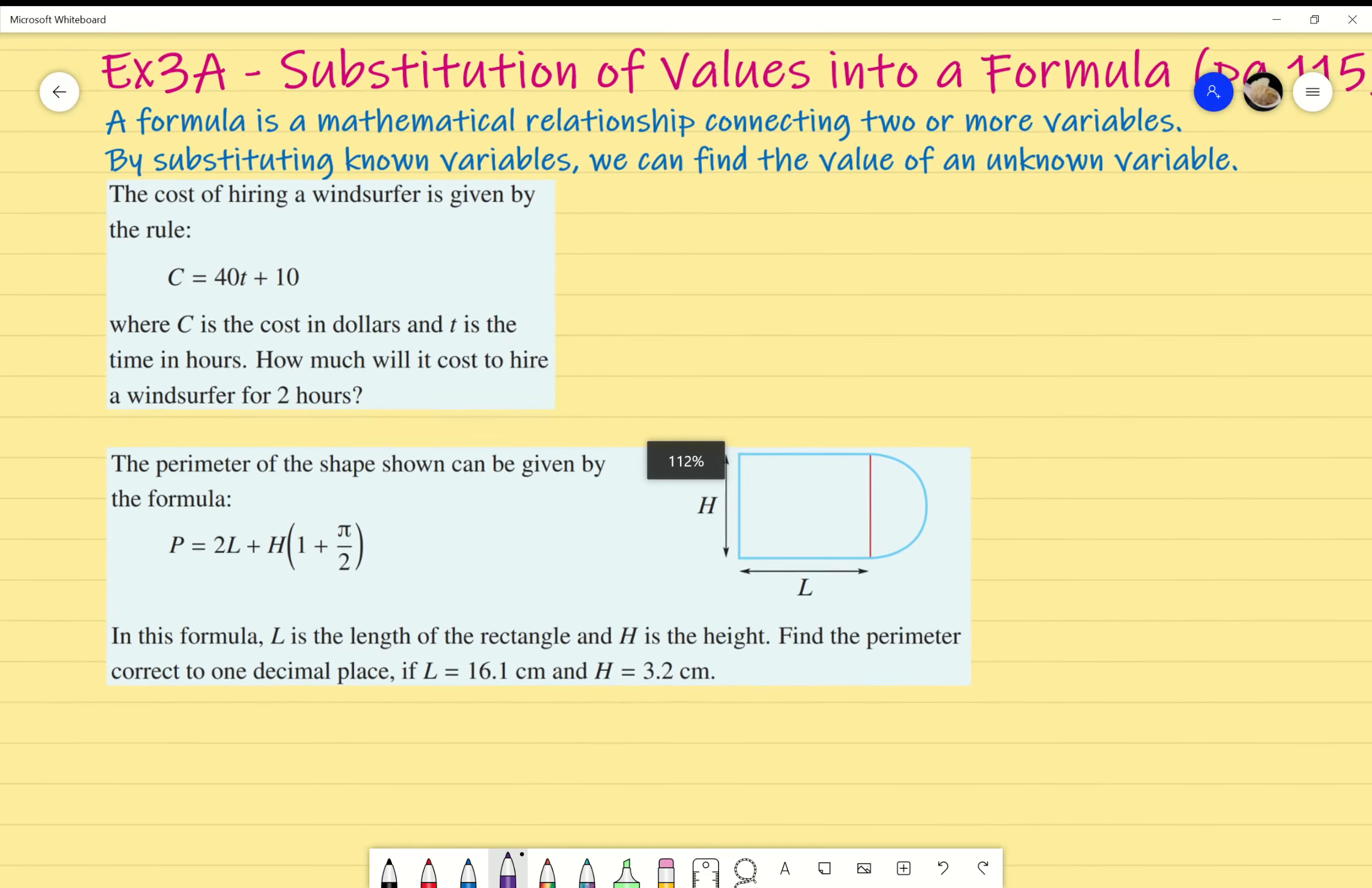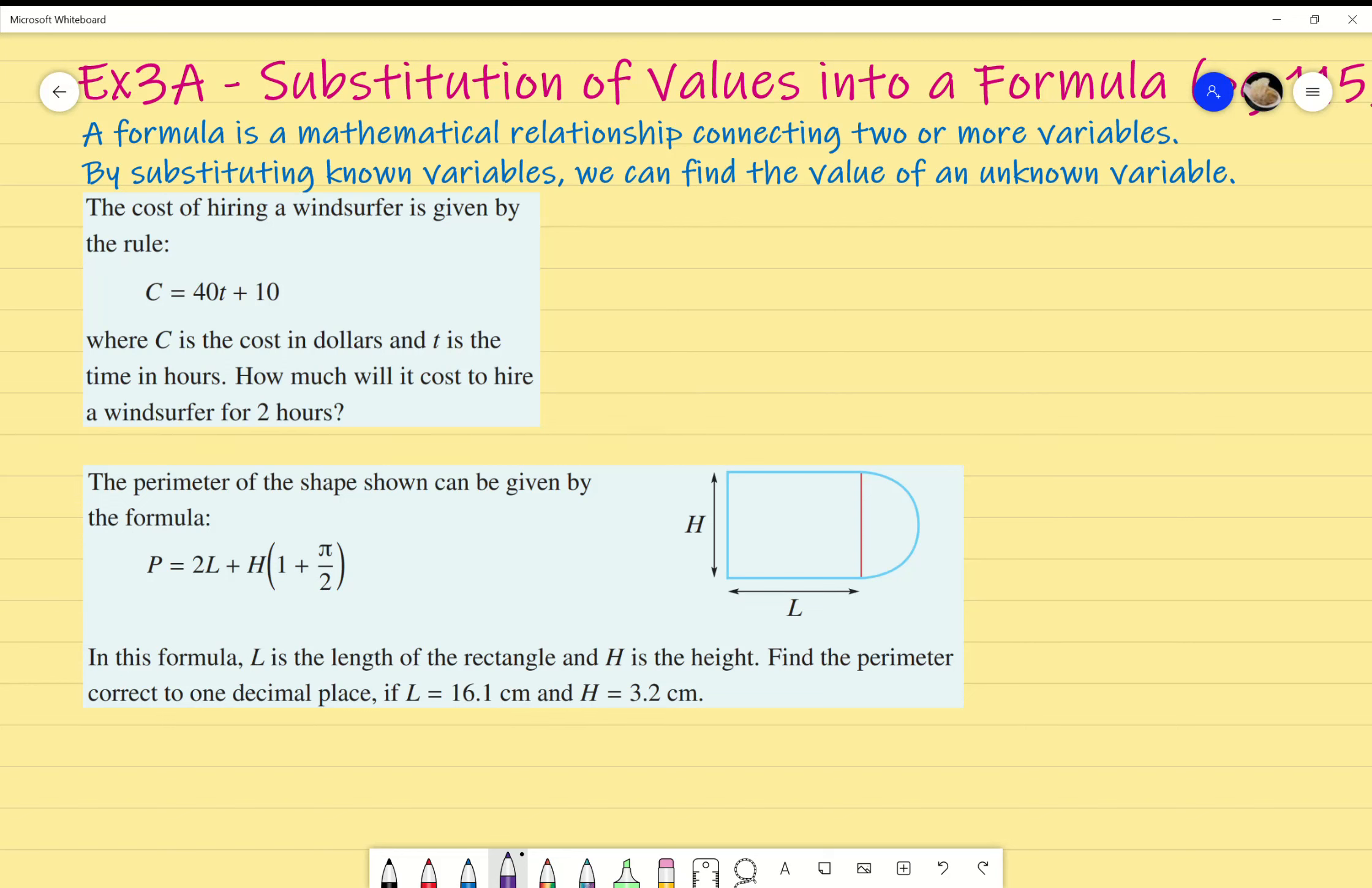Let's put that into practice. So, the cost of hiring a windsurfer is given by the rule C equals 40T plus 10. Where C is the cost in dollars and T is the time in hours. How much would it cost to hire a windsurfer for two hours? Now, before I actually answer the question, I'm going to try and interpret what that formula tells me.